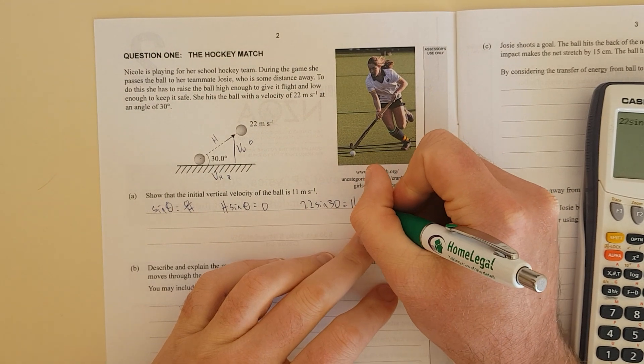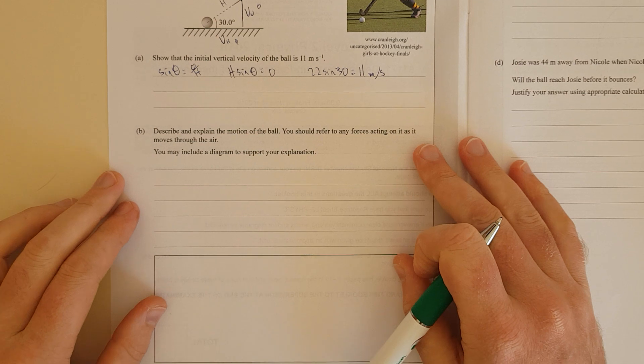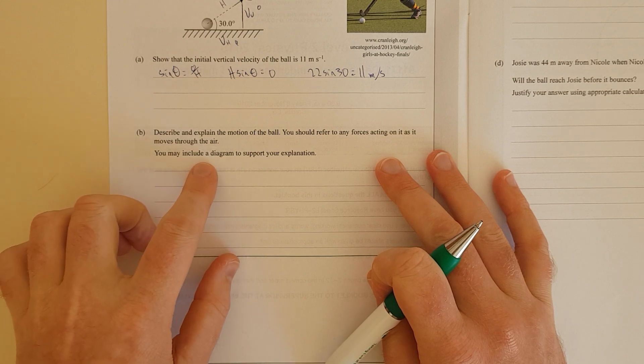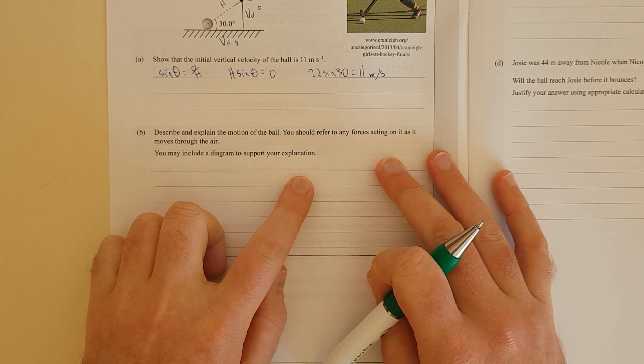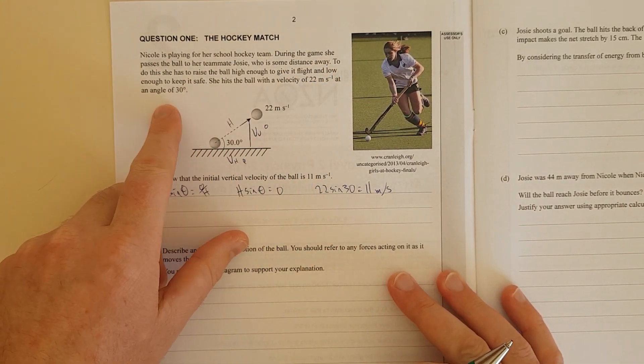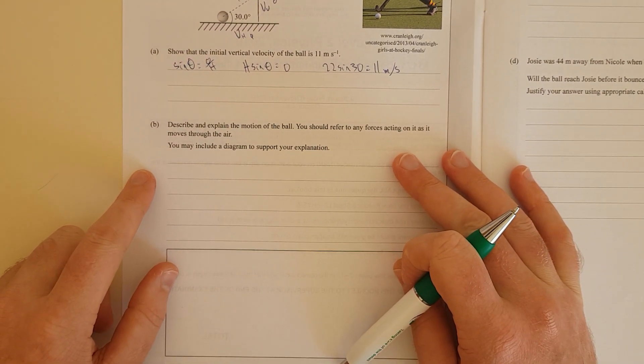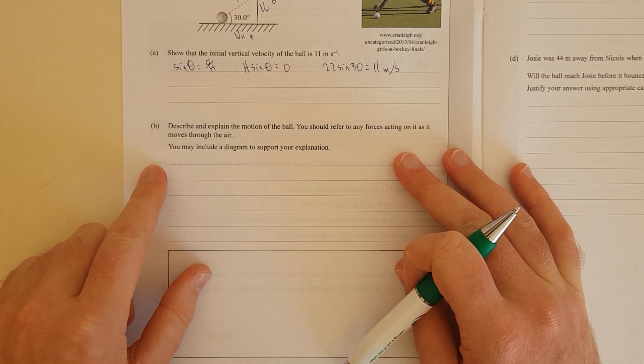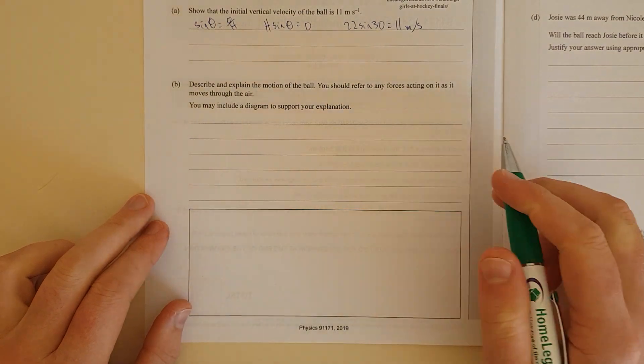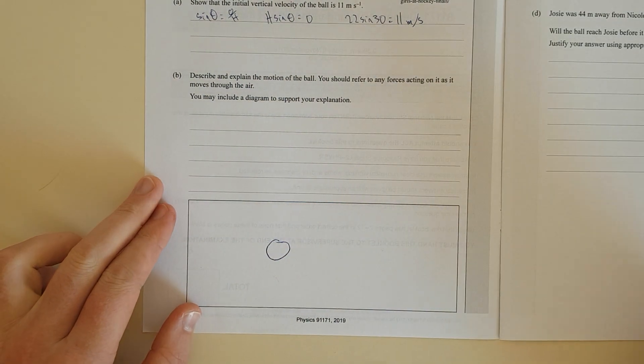Describe and explain the motion of the ball. You should refer to any forces acting on it as it moves through the air. You may include a diagram to support your answer. There's nothing about friction, so the way I'm going to answer it is I'm going to first draw a free body diagram. Here's my ball.